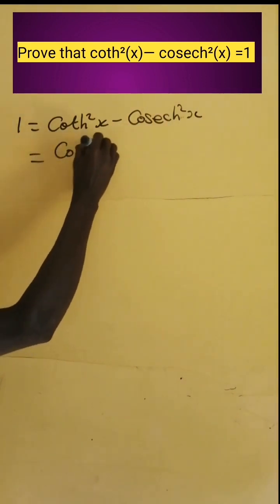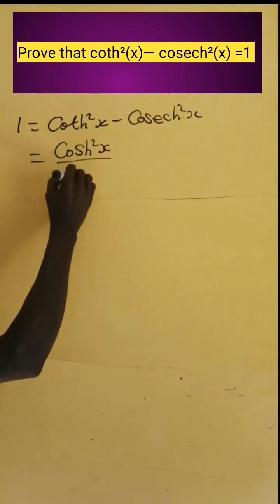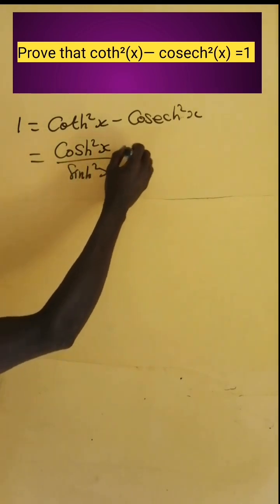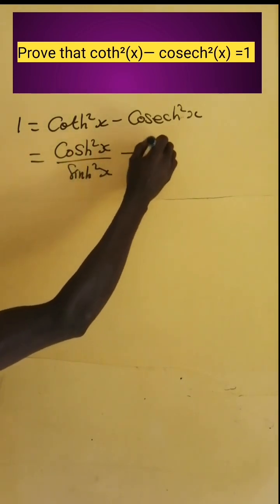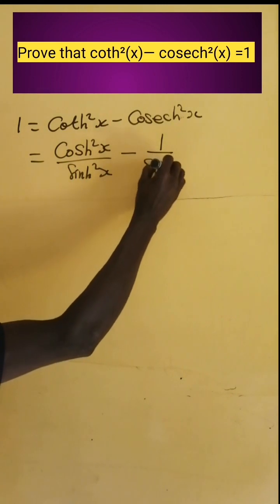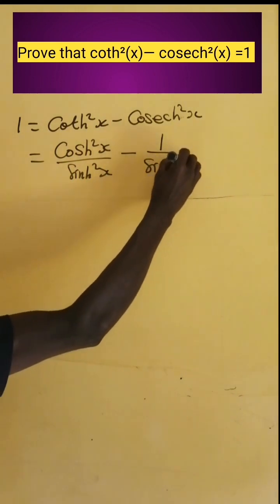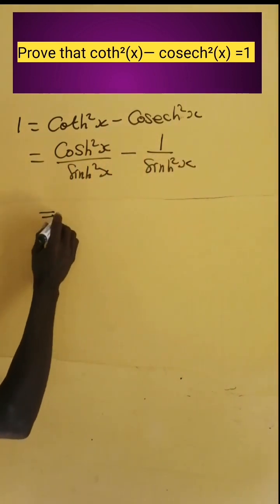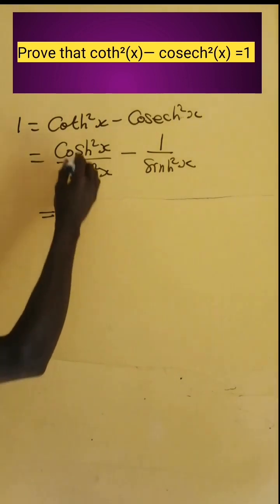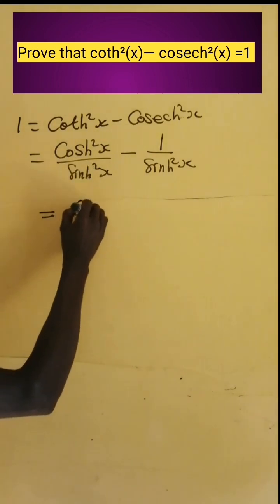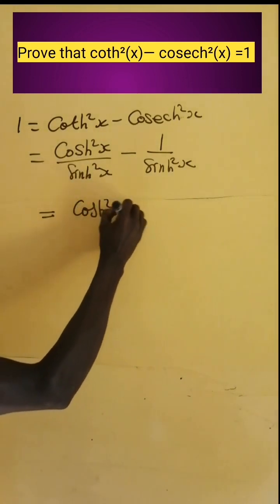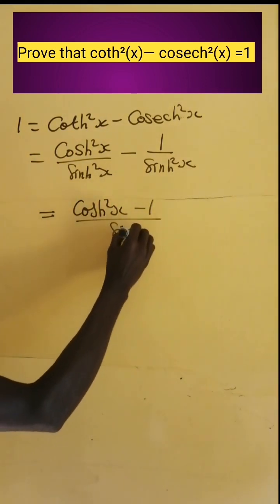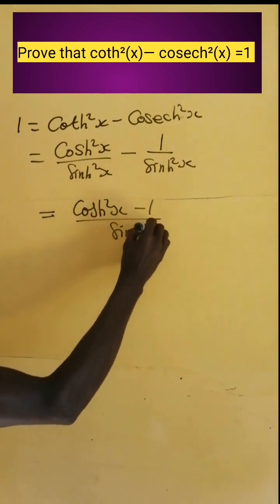We take hyperbolic cotangent squared of x, which equals hyperbolic cosine squared of x divided by hyperbolic sine squared of x, minus hyperbolic cosecant squared of x, which equals 1 divided by hyperbolic sine squared of x. Since the denominators are the same, we simplify the numerator to get hyperbolic cosine squared of x minus 1, all divided by hyperbolic sine squared of x.